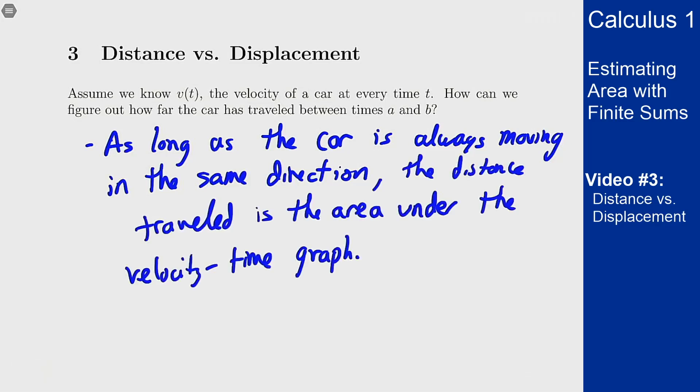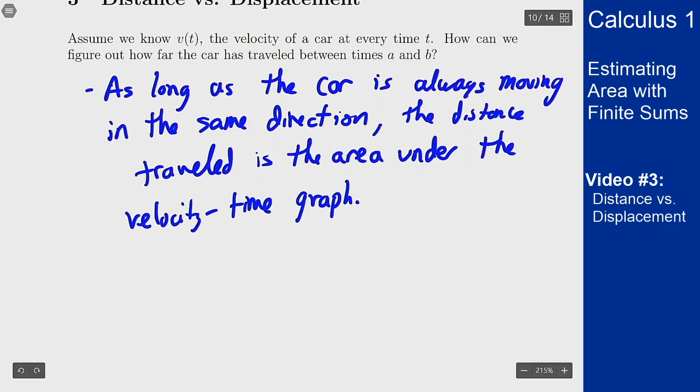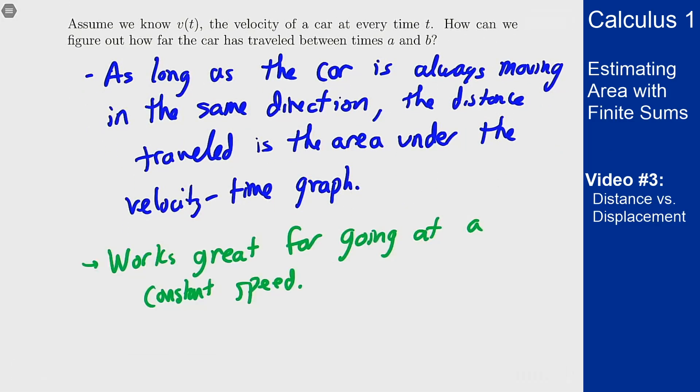It definitely works great if you're going at a constant speed, but if not, how can I approximate this? Well, I could approximate this by saying at every second, tell me how fast you're going, and then I will multiply how fast you're going by that one second interval.